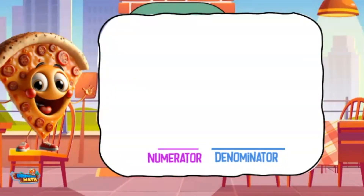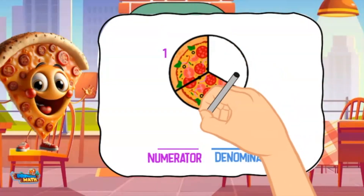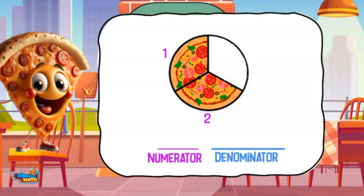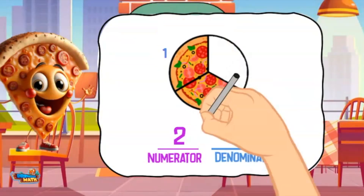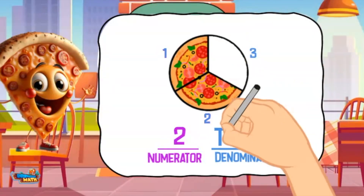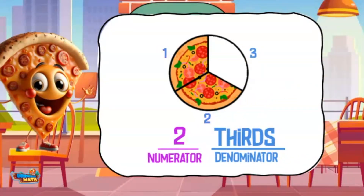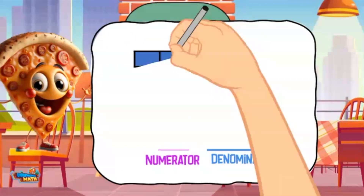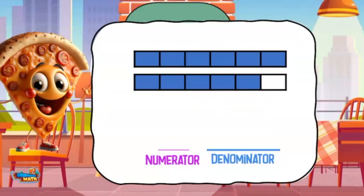When writing fractions in numeral word form, we write the numerator with a number and then the denominator with words. The numerator in this fraction represents the pieces of pizza shown — there are two slices, so the numerator is two. We write the number two. Now for the denominator: there are three parts, and three parts are called thirds. The fraction represented is two thirds.